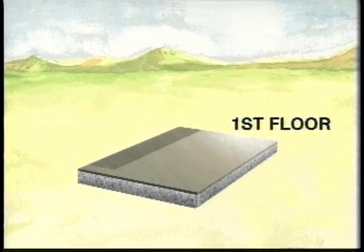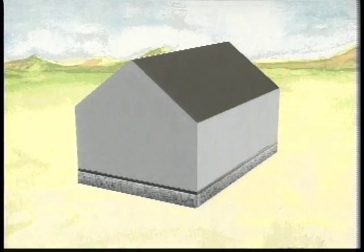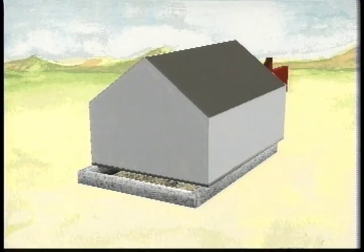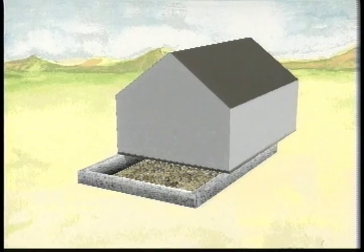Anchor bolt failure, or lack of anchor bolts, works something like this. When the earthquake force pushes on a house that isn't sufficiently tied to the foundation, it slides off. Sort of like pulling the rug out from under it.